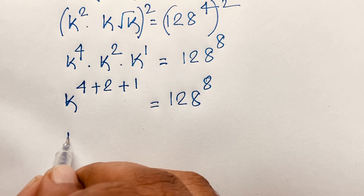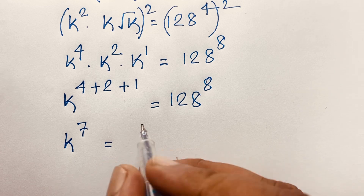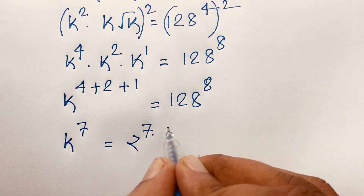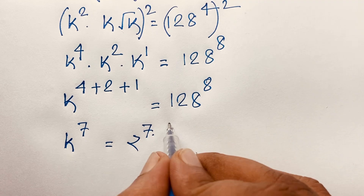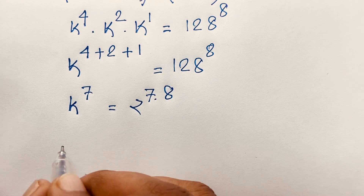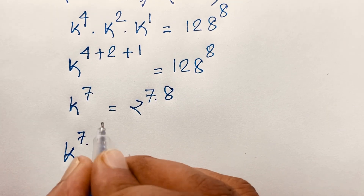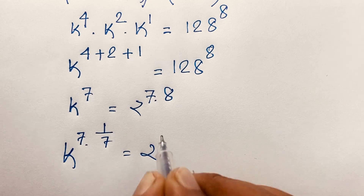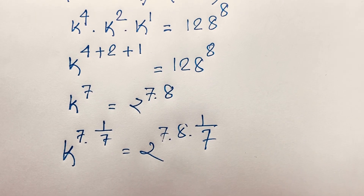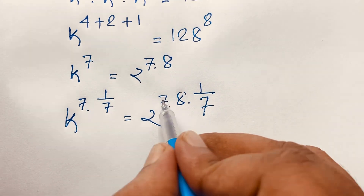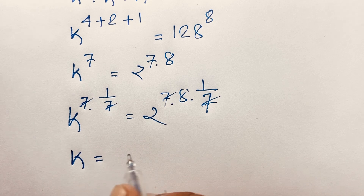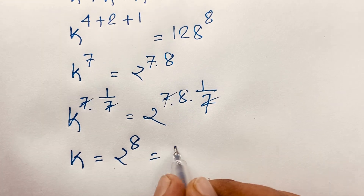Now we find that k to the power 7 is equal to 128 to the power 8. We know that 128 is 2 to the power 7, so this becomes 2 to the power 56. Now I apply both sides to the power 1 over 7: the 7s cancel out, and we find k is equal to 2 to the power 8, which is 256.